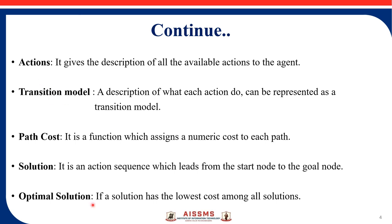Actions give the description of all available actions to the agent. Transition model: a description of what each action does, represented as a transition model. Path cost is a function which assigns a numeric cost to each path from one node to another, from start node to goal node — each and every action has a defined cost value. Solution is an action sequence which leads from the start node to the goal node.